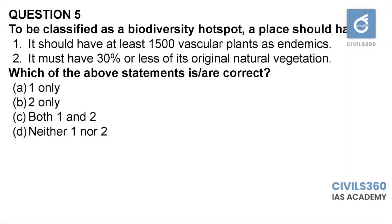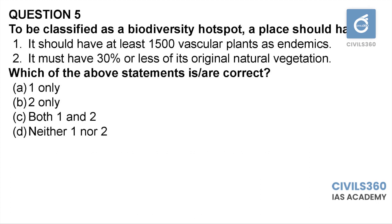Question number five: to be classified as a biodiversity hotspot, a place should meet — one: it should have at least 1500 vascular plants as endemics. Two: it must have 30 percent or less of its original natural vegetation. The term hotspot was introduced by researcher Norman Myers in a paper and later adopted and popularized by Conservation International. To qualify as a biodiversity hotspot, a region must meet two criteria: at least 1500 vascular plants as endemics, meaning a high percentage of plant life found nowhere else, and 30 percent or less of its original natural vegetation remaining. Therefore the answer is option C, both one and two.